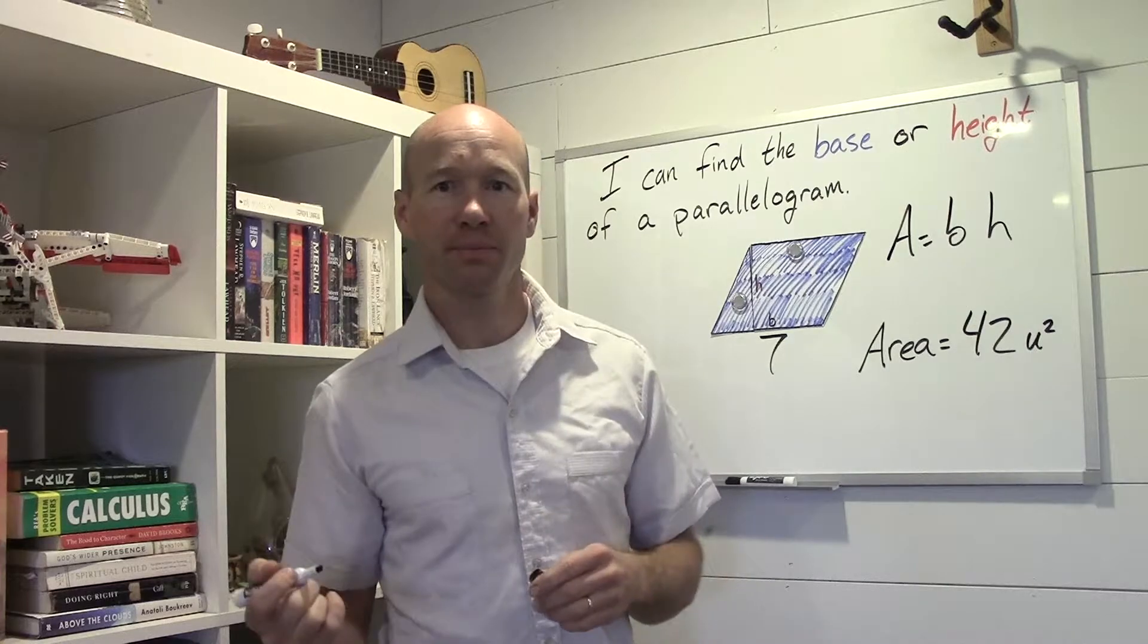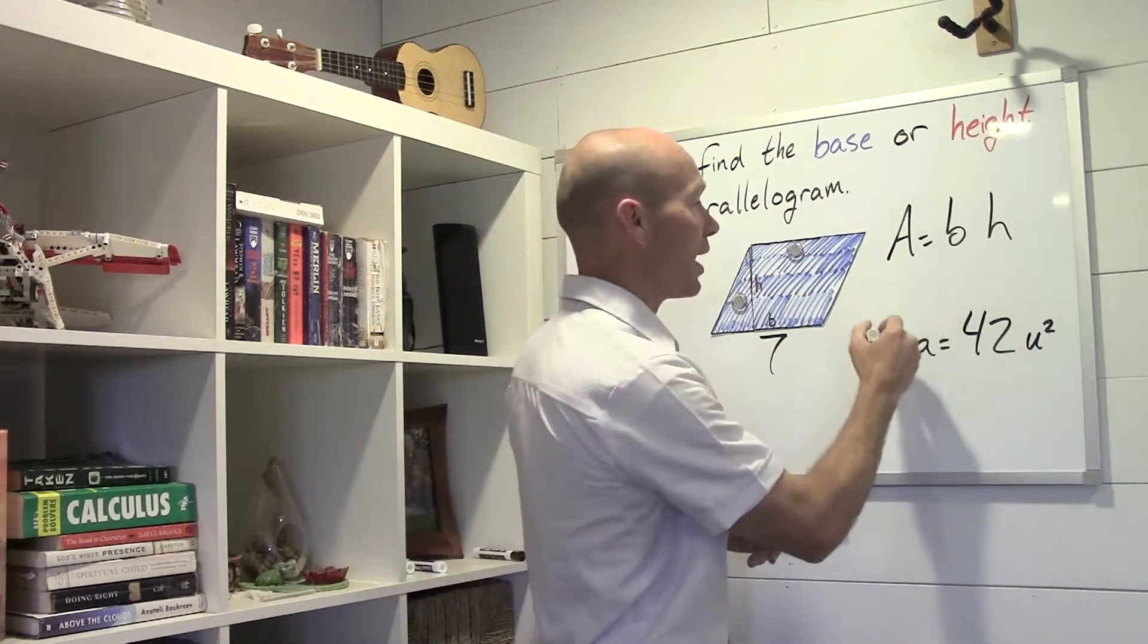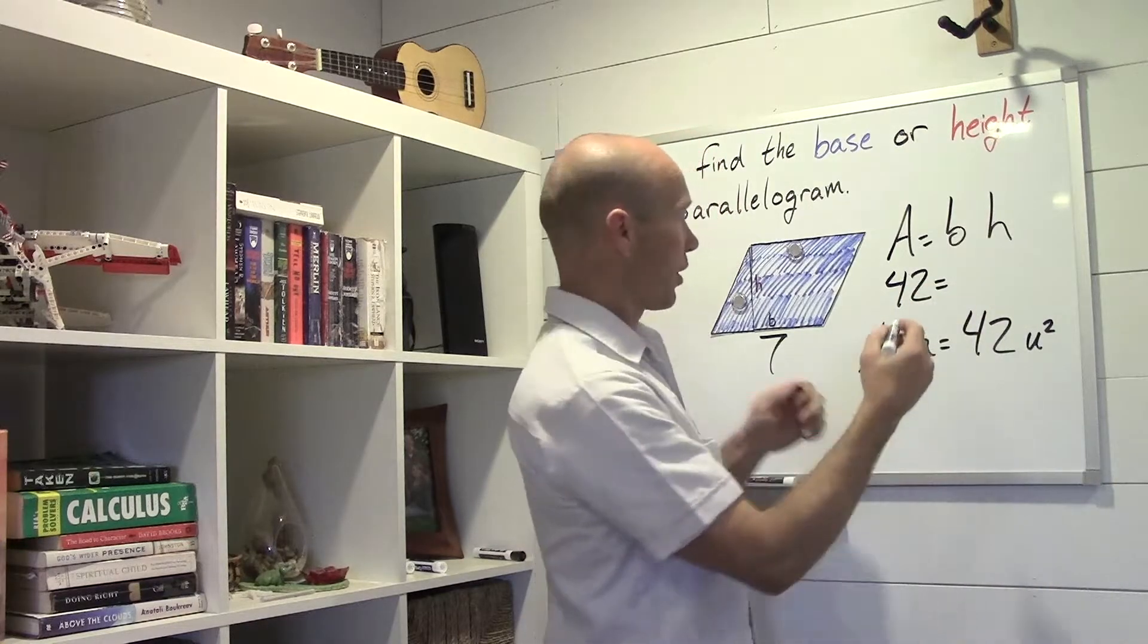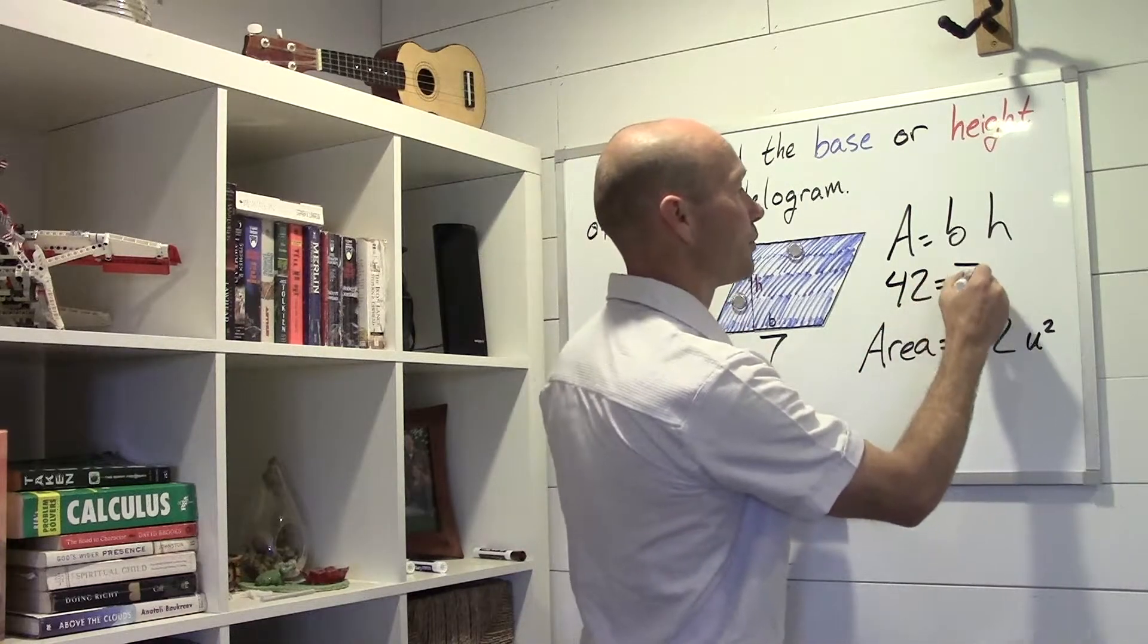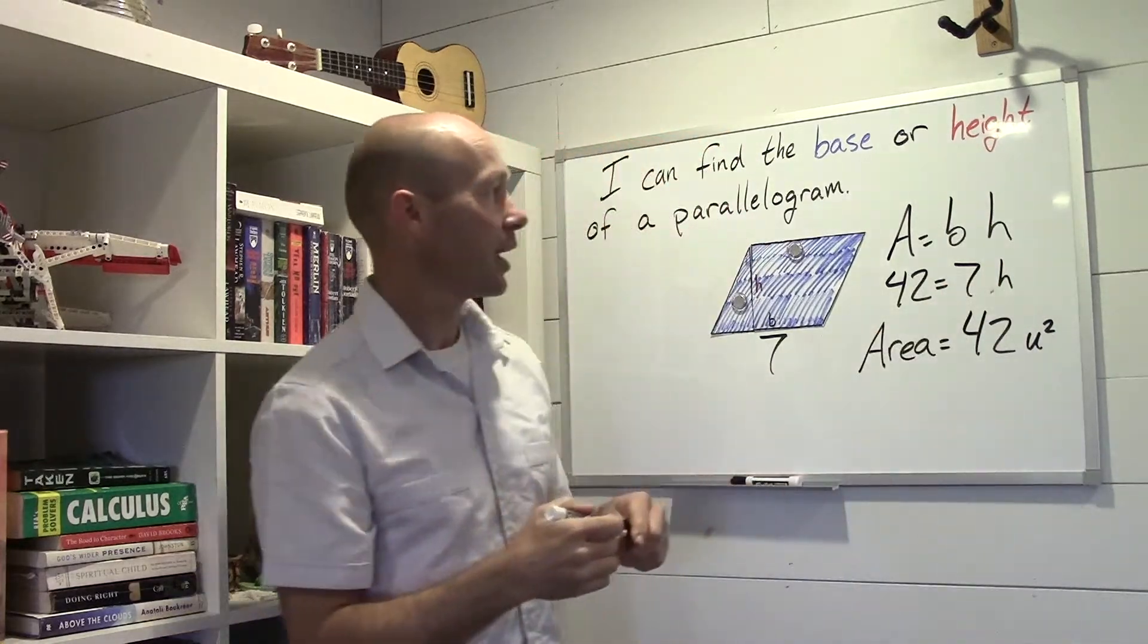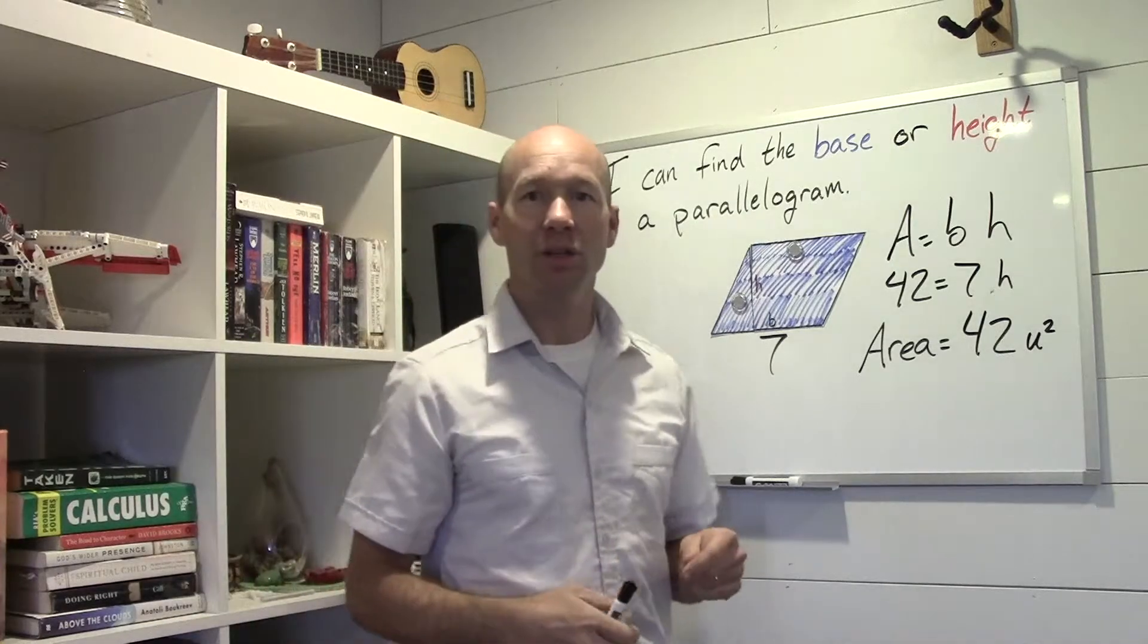So we know that this area, 42, equals the base of seven times h, or 7h. Area equals 7h.